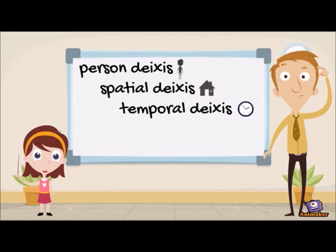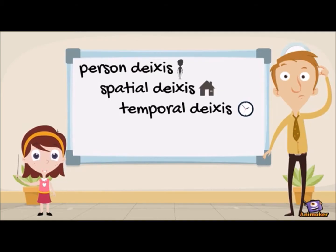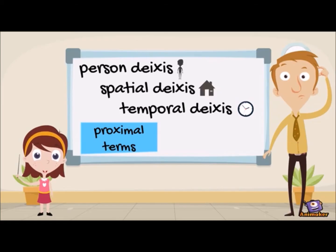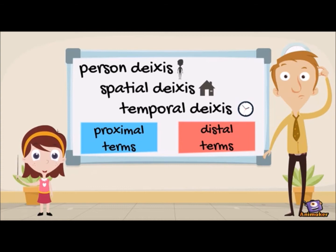They all depend on the context shared by the speaker and the hearer. These categories can be subdivided: a deictic expression can either be near the speaker or away from the speaker. Expressions near the speaker are called proximal terms, and expressions away from the speaker are called distal terms. You will see later what that exactly means.